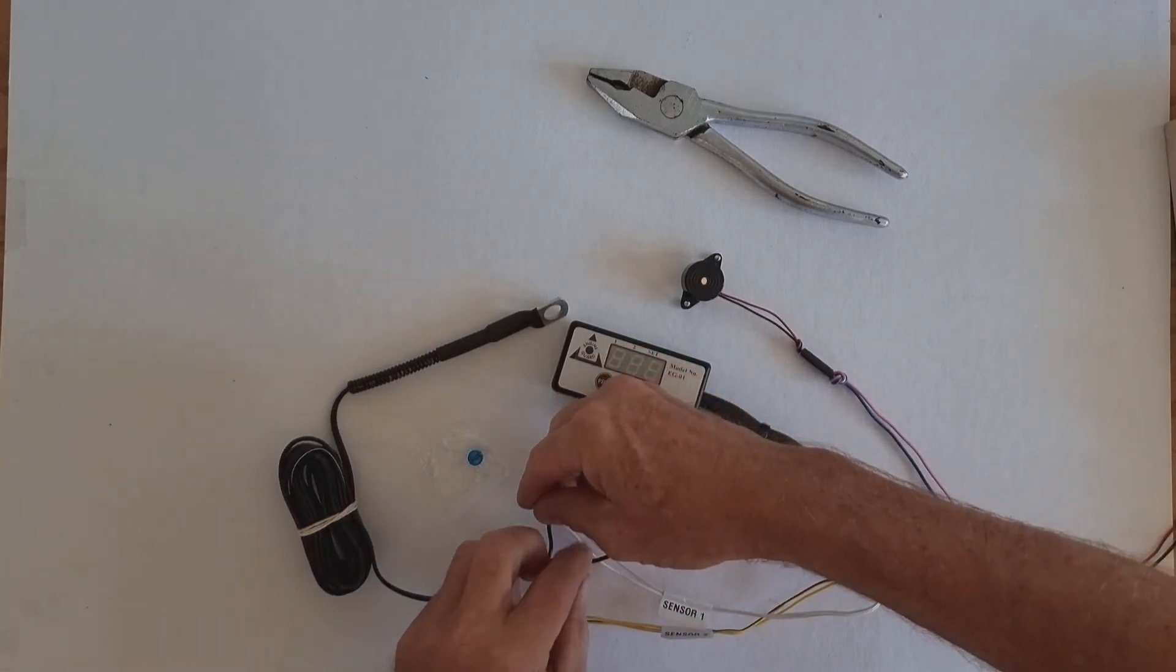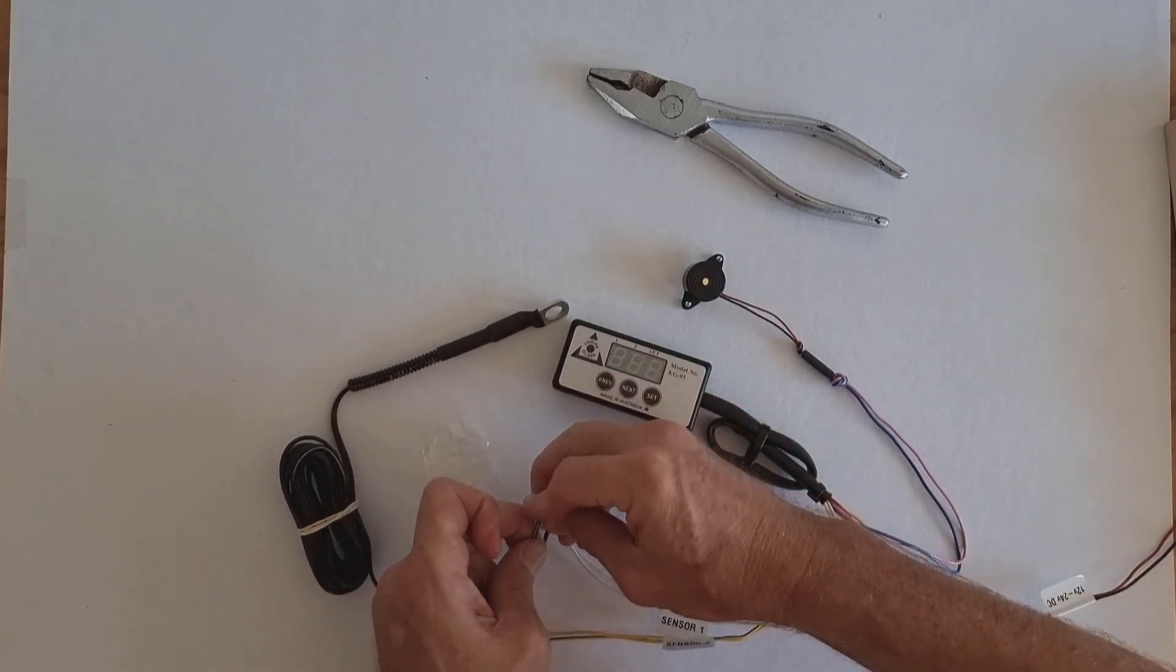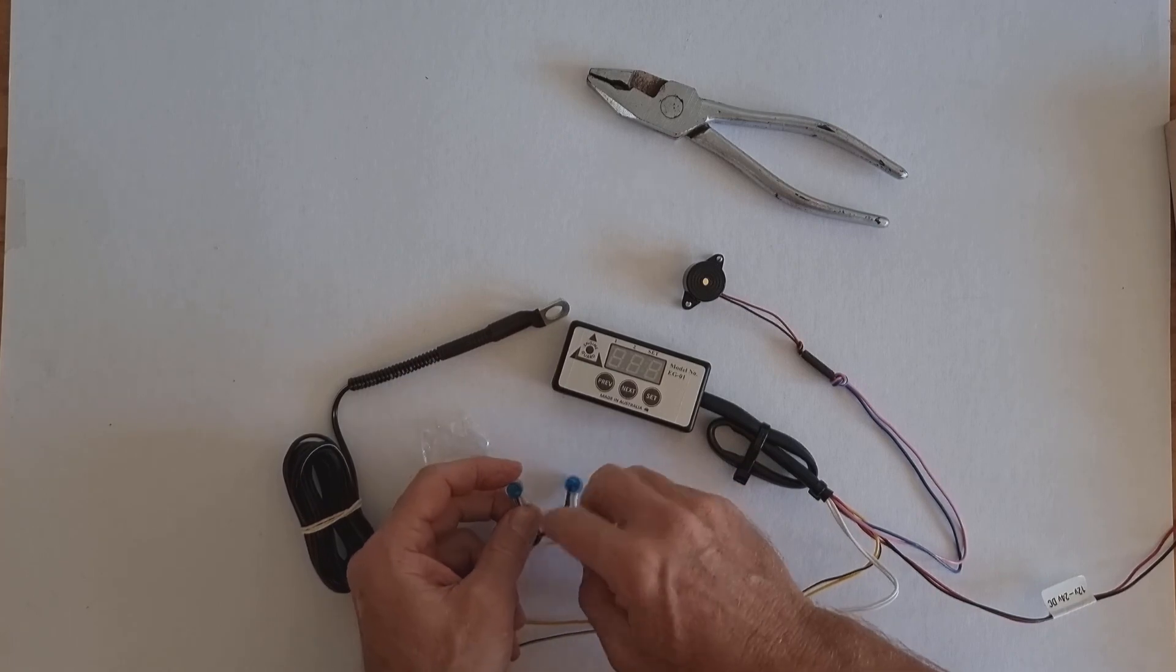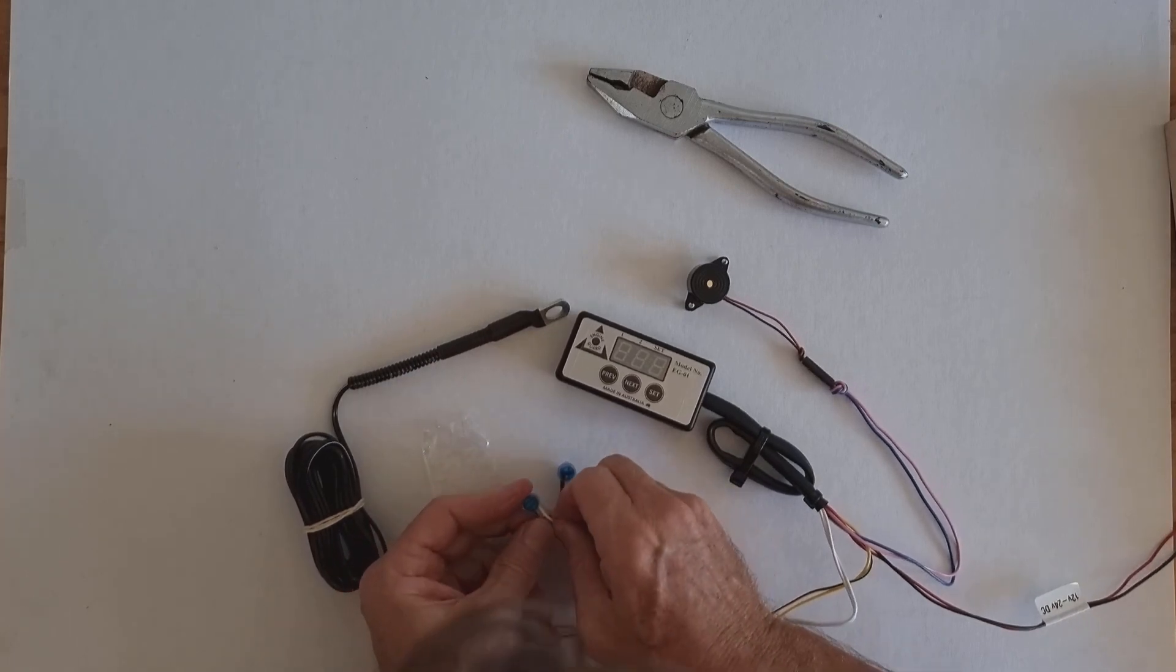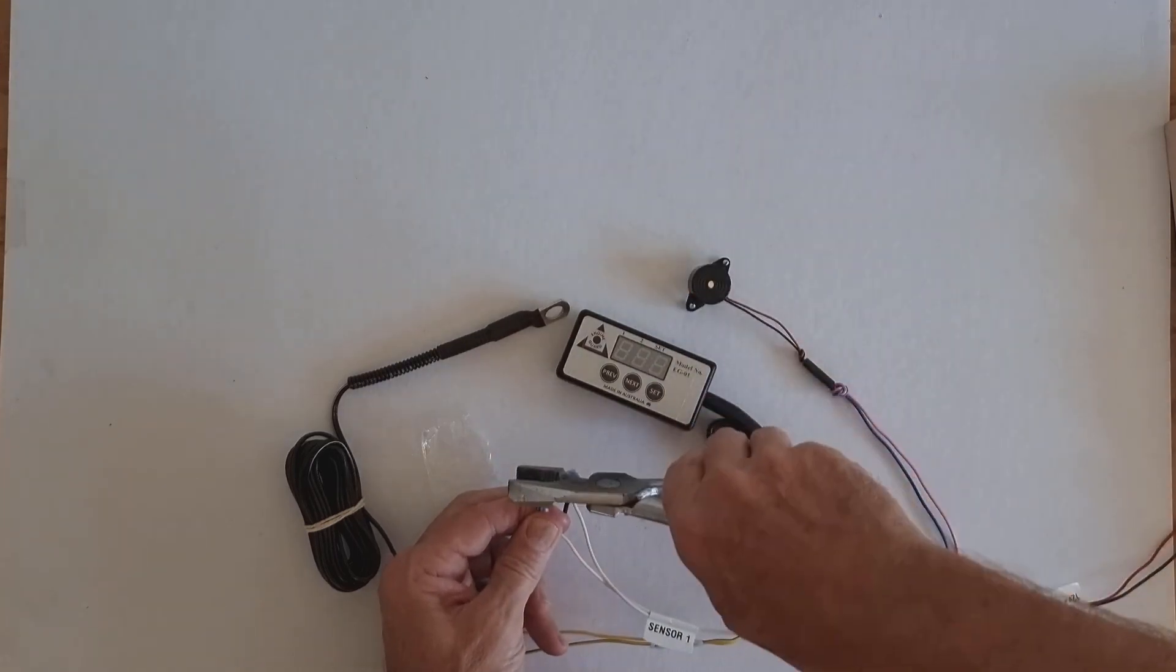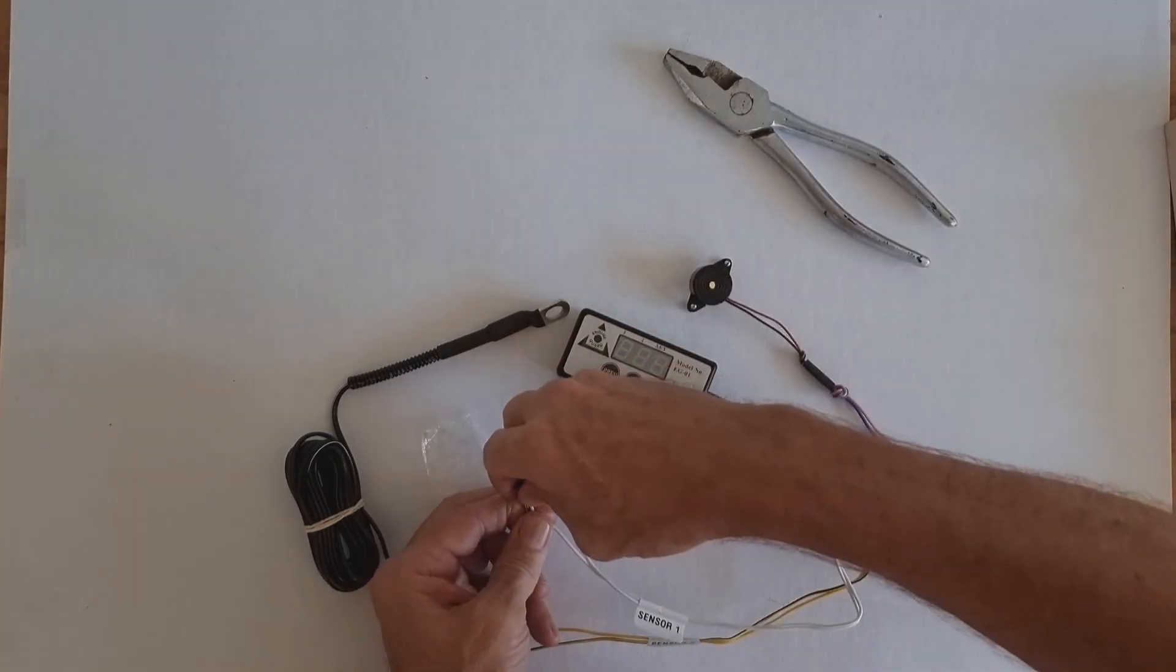And then repeat for the second wires. Sensor cable 2, input cable 2, pliers, pushing the plunger, and done.